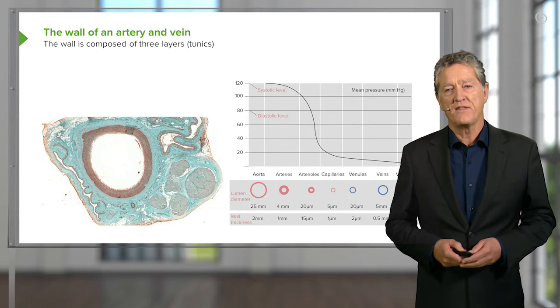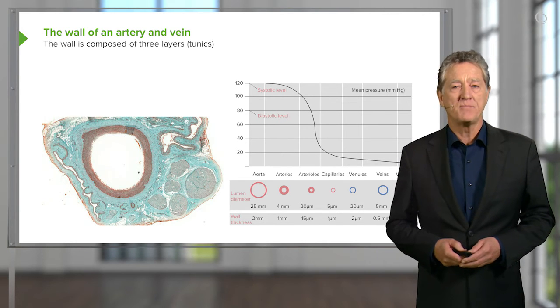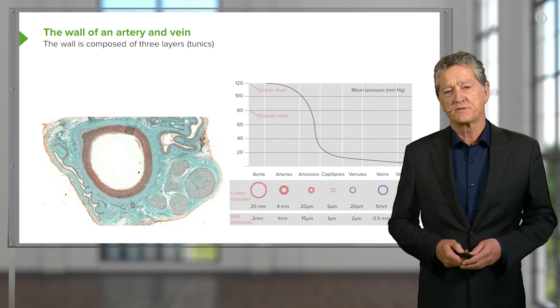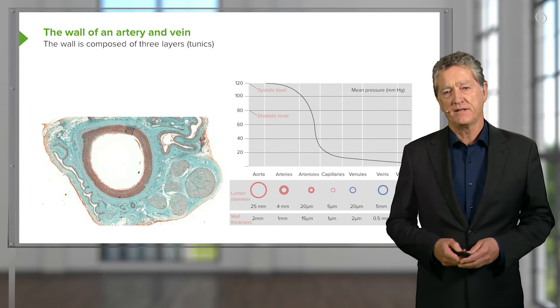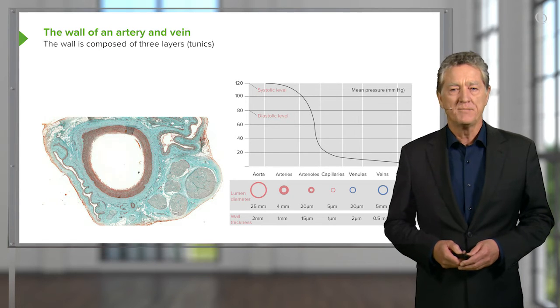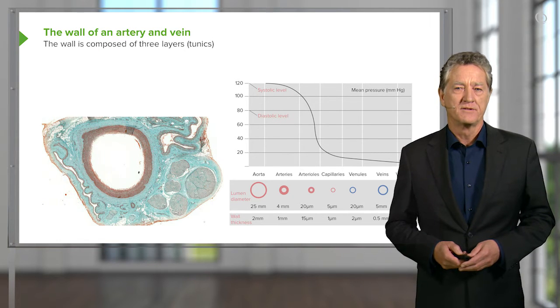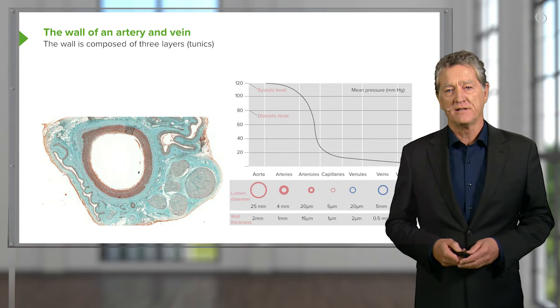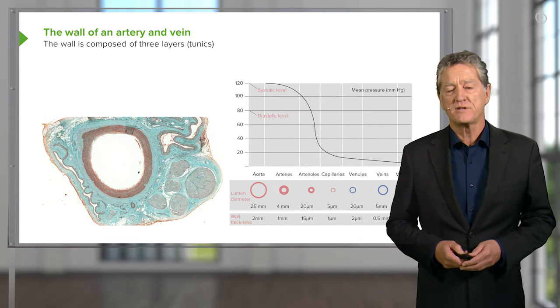And once the blood then gets into the capillary bed and beyond, the pressure is very low. So one way in which you can tell the difference between an artery and a vein, or small veins, is that bear in mind the pressure difference. Because an artery is acting under a fairly high pressure, the lumen is going to be usually nice and circular.